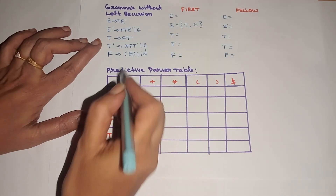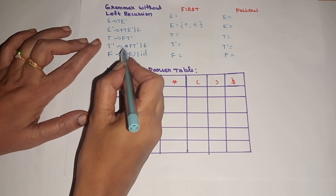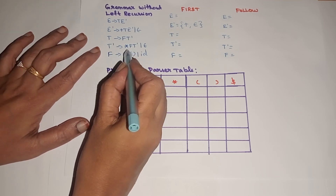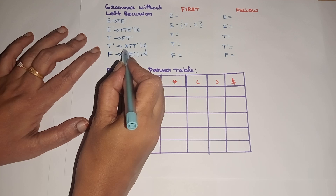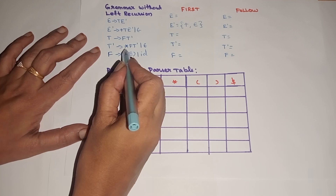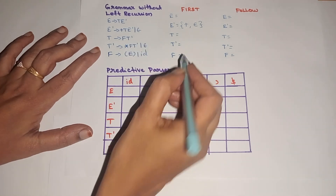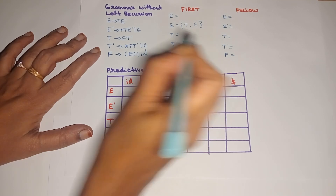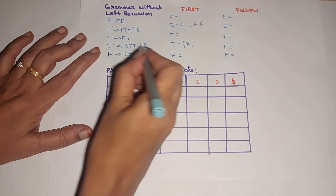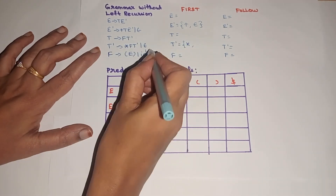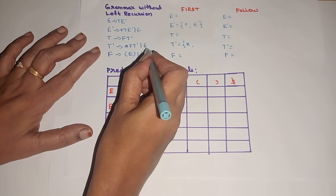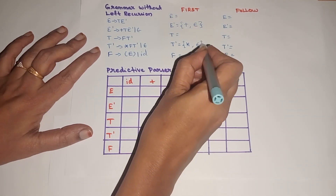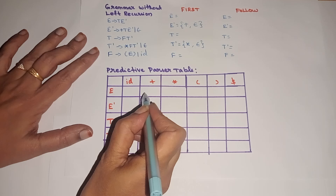Next, T tends to F T-dash — both are variables, so we see it later. For T-dash tends to star F T-dash, star is the terminal, so first of T-dash includes star. Since T-dash tends to epsilon, we also include epsilon. Thus first of T-dash is {star, epsilon}.